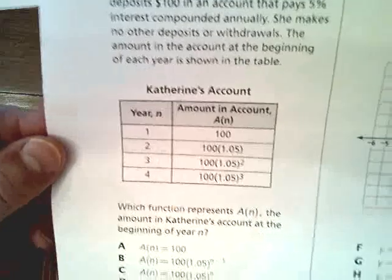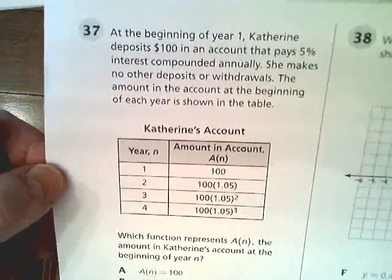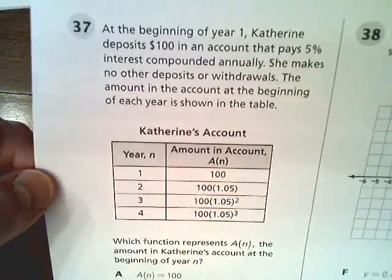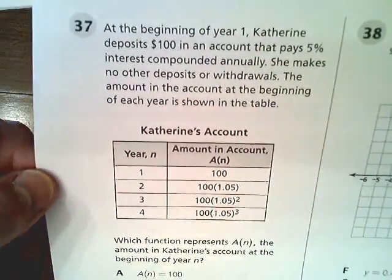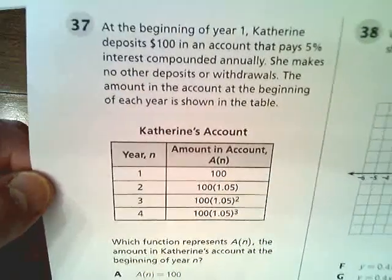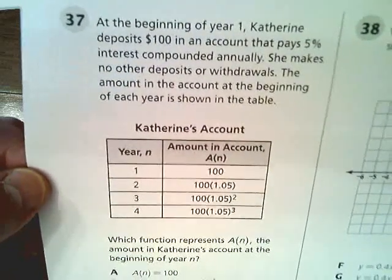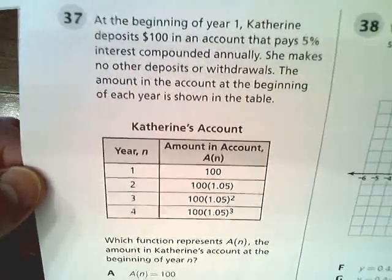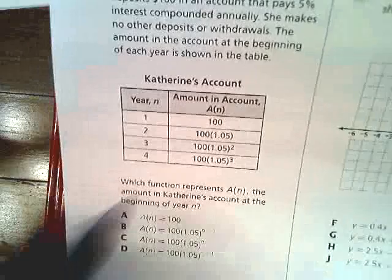In the beginning of year 1, Catherine deposits $100 in an account that pays 5% interest compounded annually. She makes no other deposits or withdrawals. The amount in the account at the beginning of each year is shown in the table.